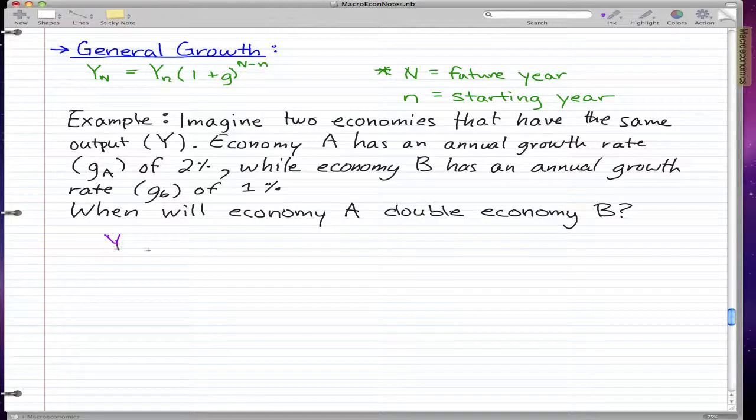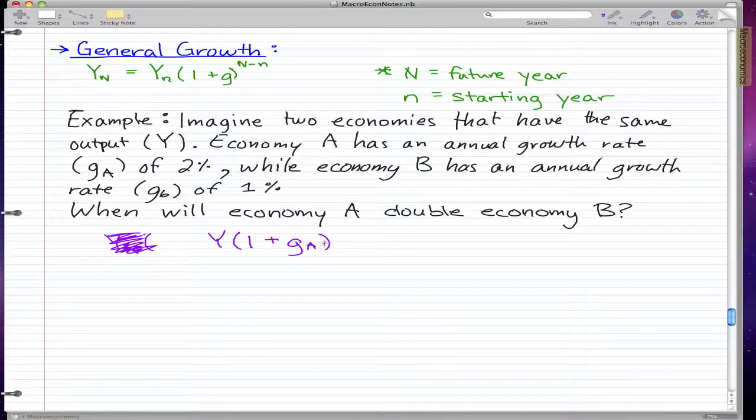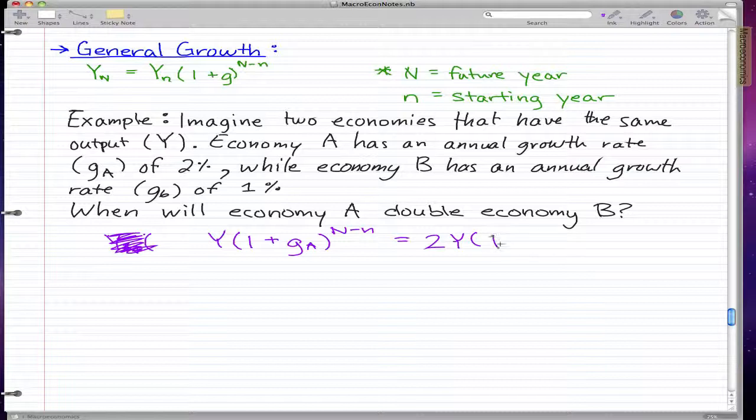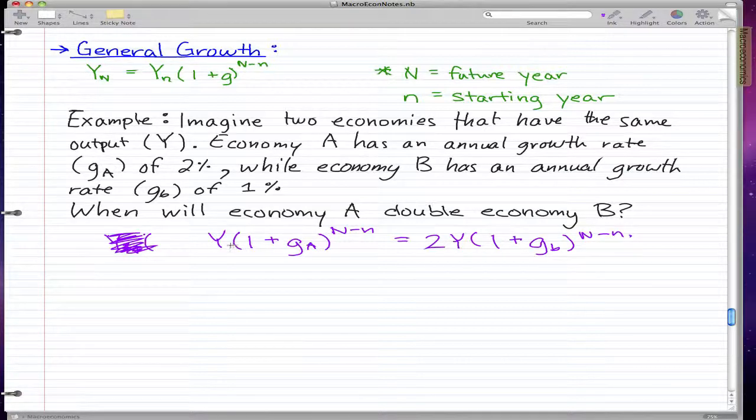So Y times 1 plus growth of A to the power of N minus n equals 2 times Y 1 plus growth of economy B to the power of N minus n. So pretty much this is when economy A has doubled economy B. Economy B needs to be multiplied by 2 to equal economy A. That means economy A has doubled economy B.